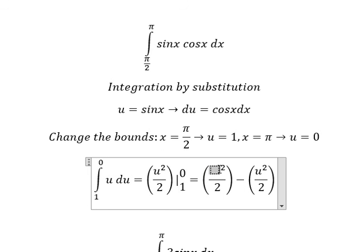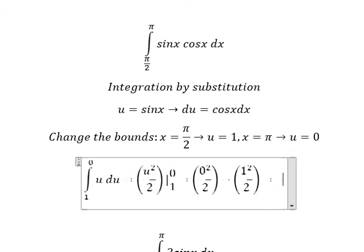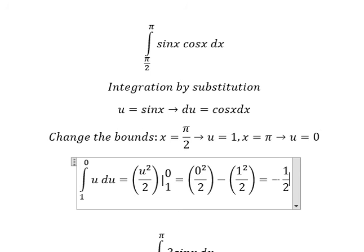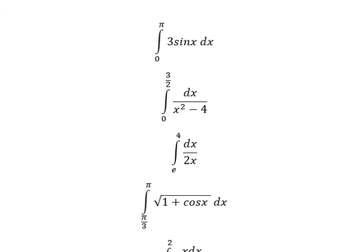We put number 0 in here and number 1 in here. So we have negative 1 over 2. And this is the final answer. Now let's go to the next one.